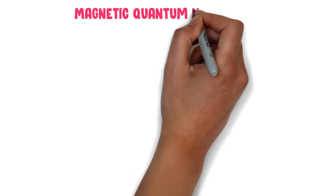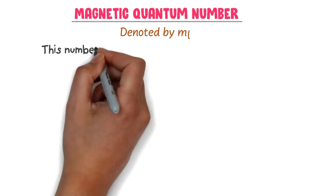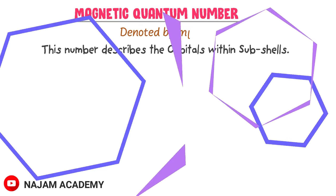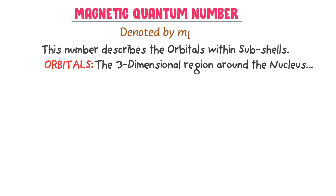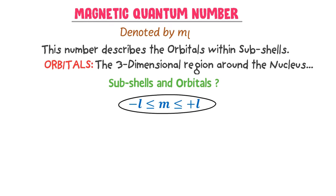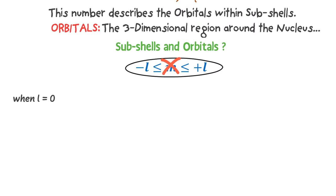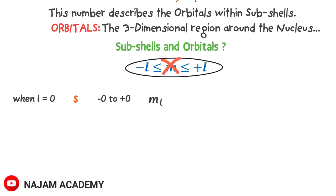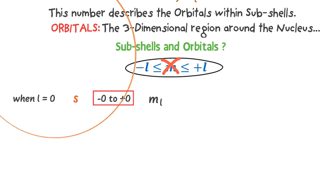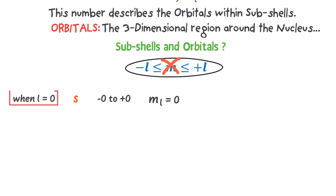The third quantum number is magnetic quantum number. It is denoted by m sub l. This number describes the orbitals within a subshell. We define orbitals as the three-dimensional region around the nucleus where the probability of finding an electron is maximum. The formula is ml is greater than or equal to negative l and ml is smaller than or equal to positive l. But again I do not use this formula — I use my personal trick. When l is equal to zero it is s subshell. Go from negative zero to positive zero; there is no negative or positive zero, so the possible value of ml is zero. Hence when l equals zero, ml equals zero and s subshell has one orbital.